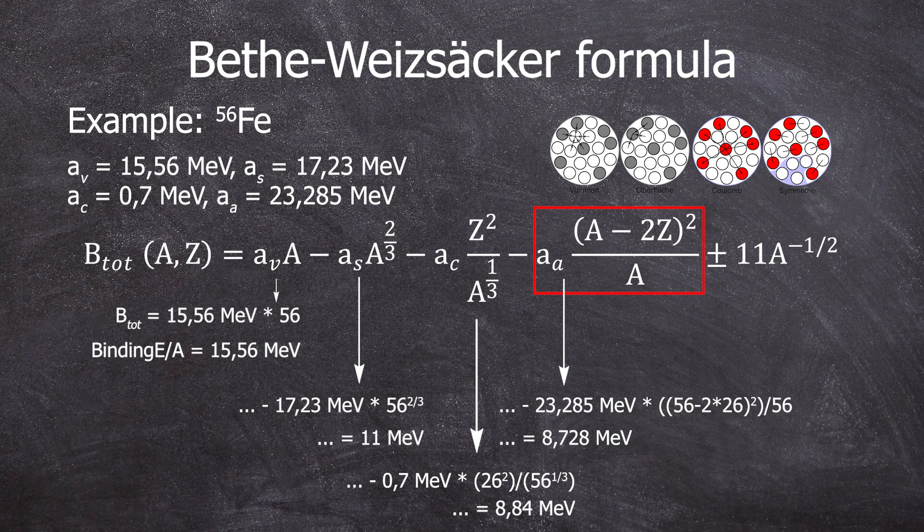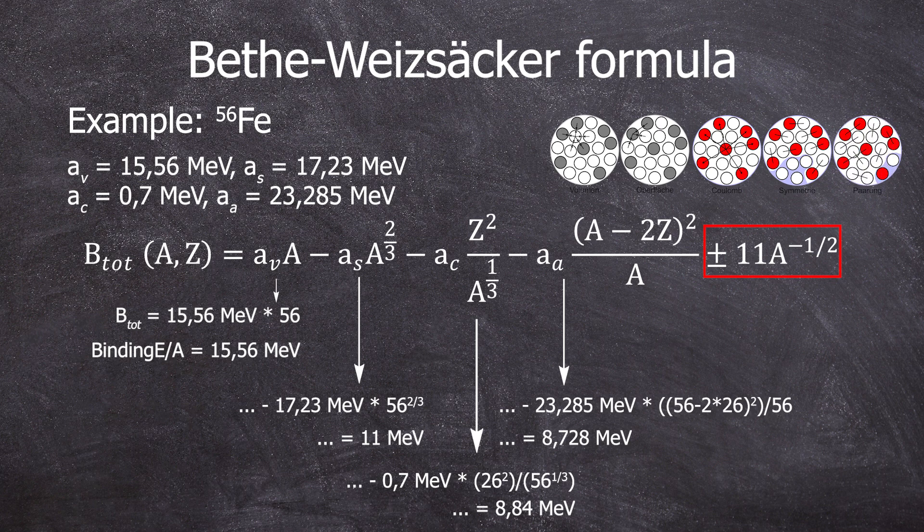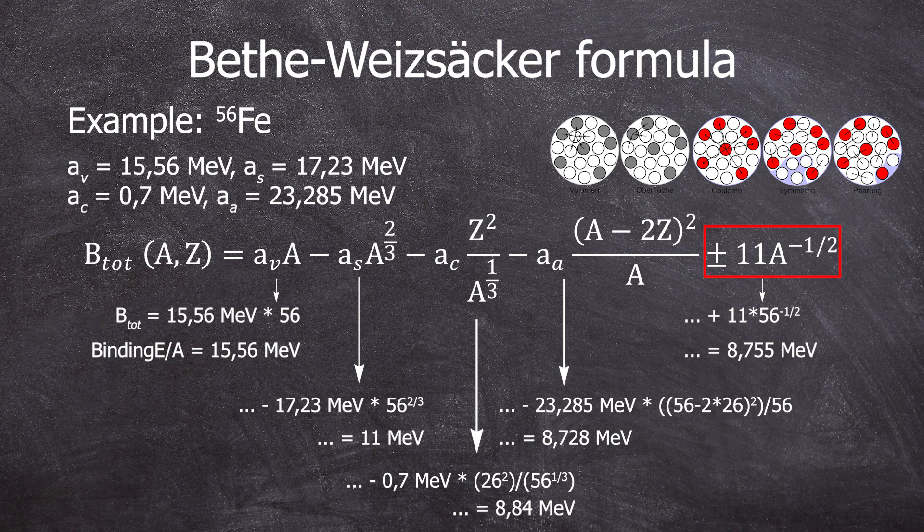And iron-56 is a GG nucleus, an even number of protons, 26, and with 30 neutrons, we also have an even number of neutrons. GG nuclei are stable and that makes the nucleus a bit more stable again. And in this case, we are allowed to add plus 11 times 56 to the power of minus one half, which brings the binding energy to 8.755 mega electron volts per nucleon. If it was a UG nucleus, this term should be neglected. If it was to be a UU nucleus, you would calculate minus 11 times A to the power of minus one half.